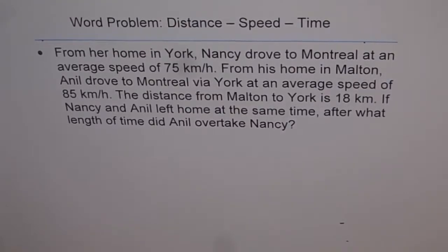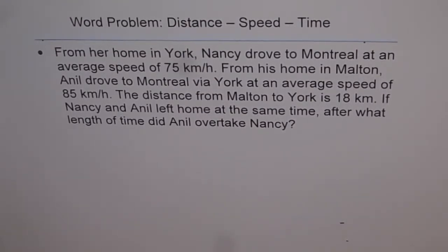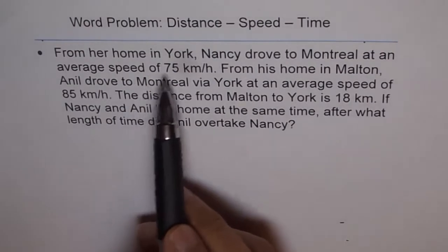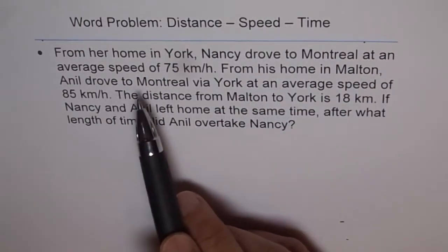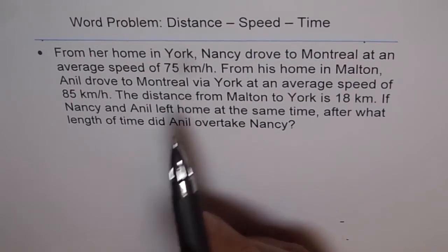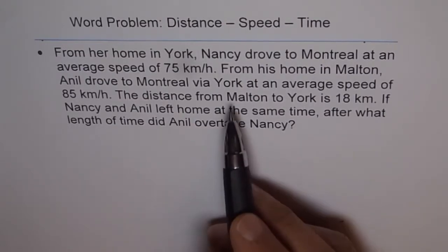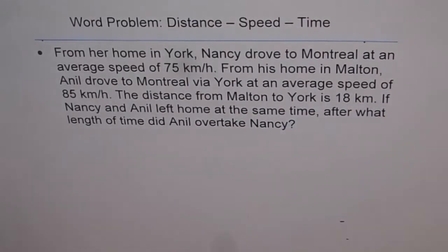Let's try to understand how to solve distance speed time problems. Here is an interesting question. From her home in York, Nancy drove to Montreal at an average speed of 75 kmph. From his home in Malton, Anil drove to Montreal via York at an average speed of 85 kmph.